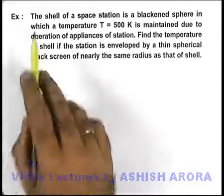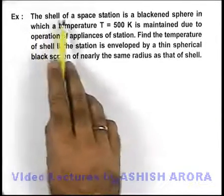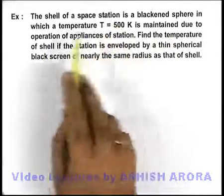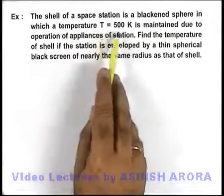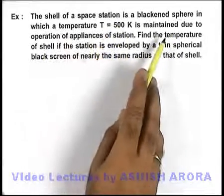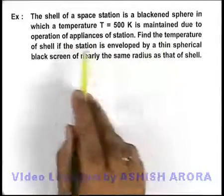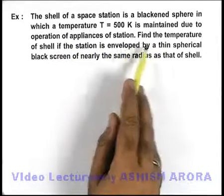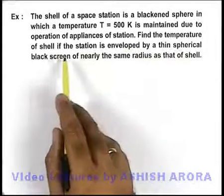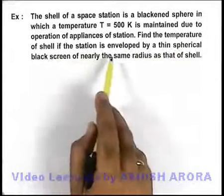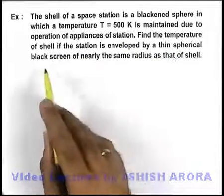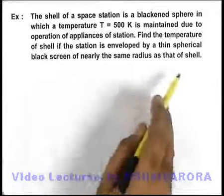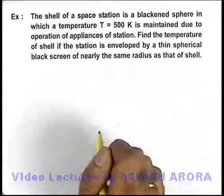In this example, we are given that the shell of a space station is a blackened sphere in which a temperature of 500 Kelvin is maintained due to operation of appliances of the station. We are required to find the temperature of the shell if the station is enveloped by a thin spherical black screen of nearly the same radius as that of the shell.